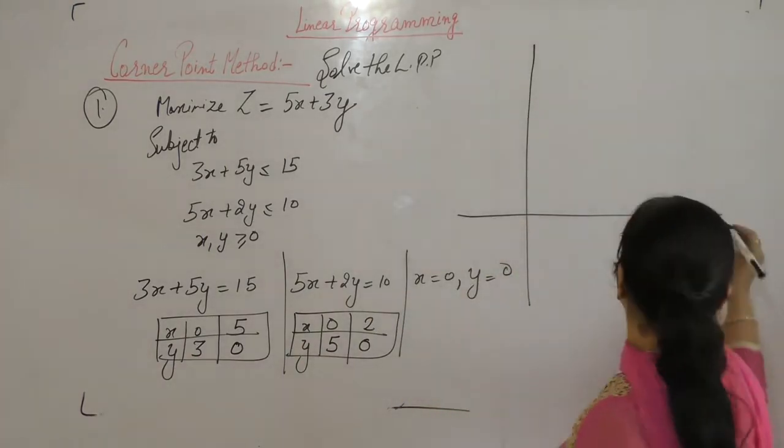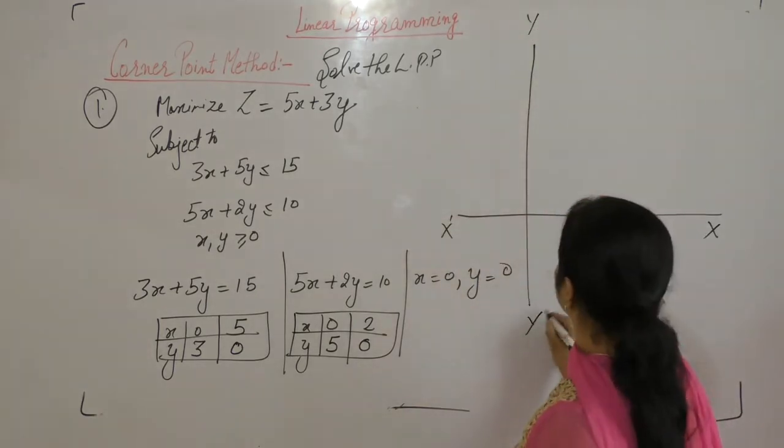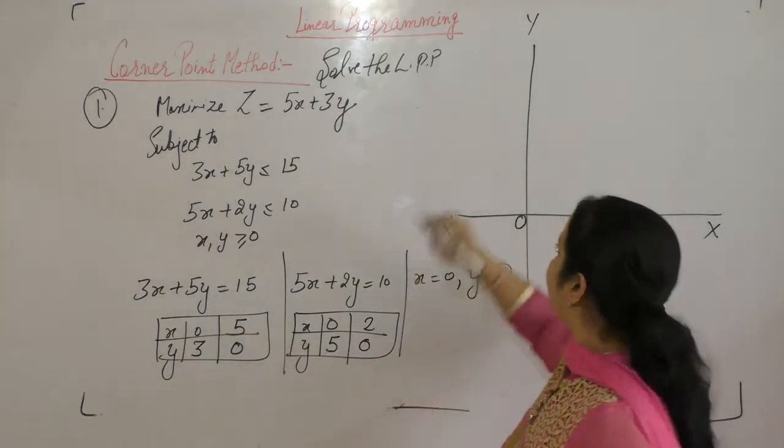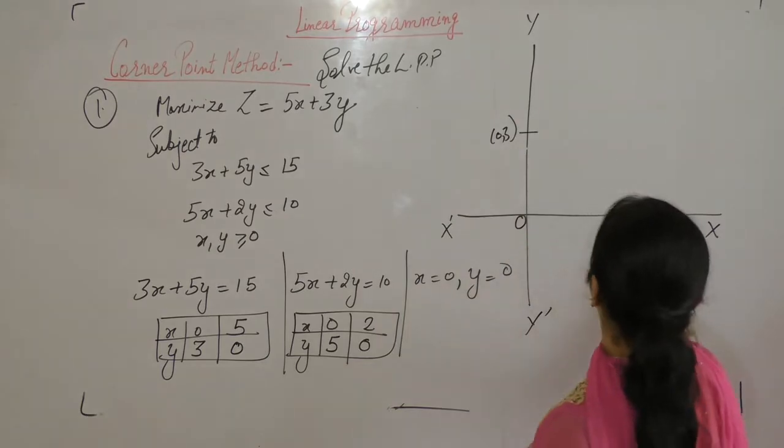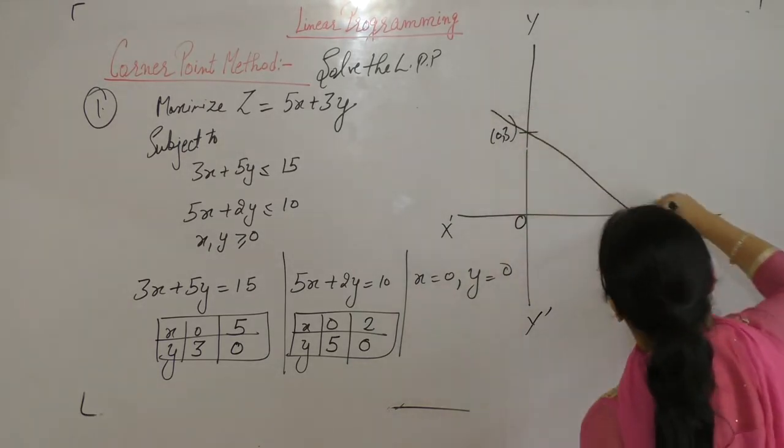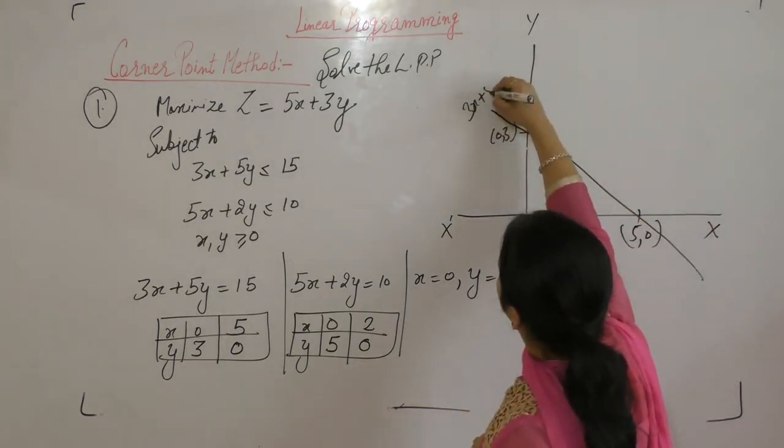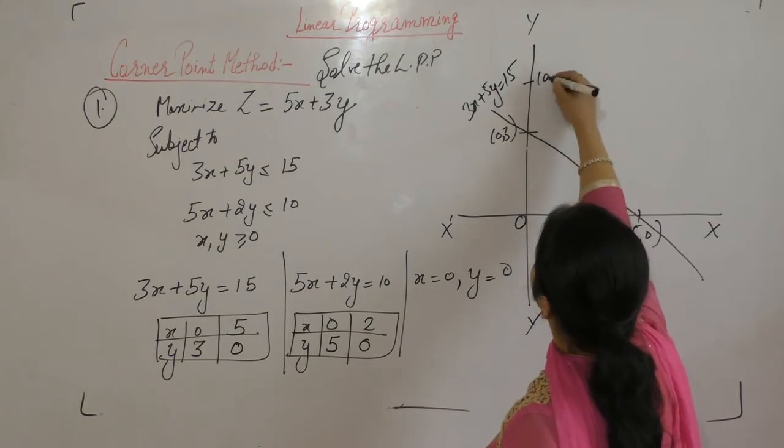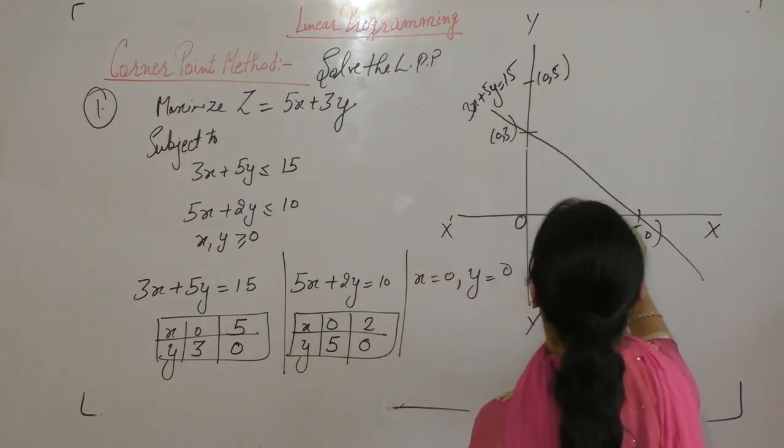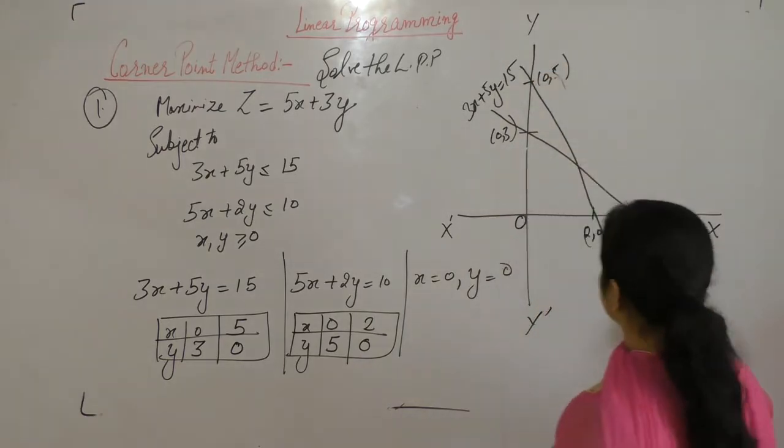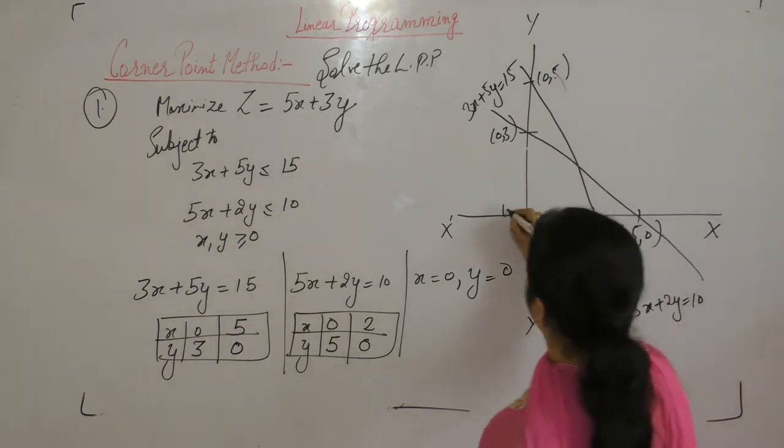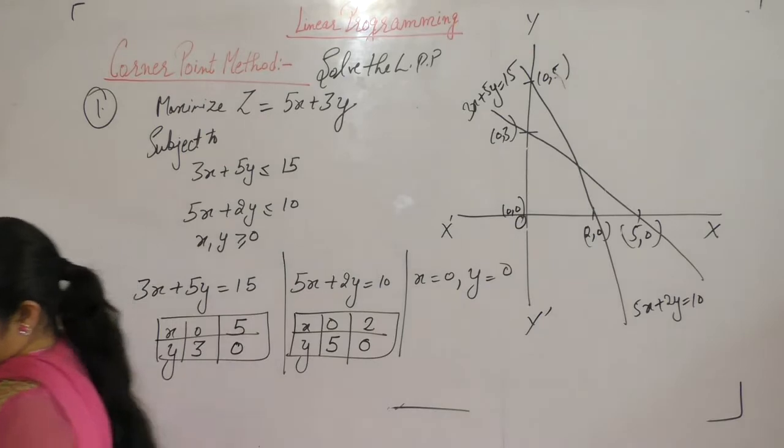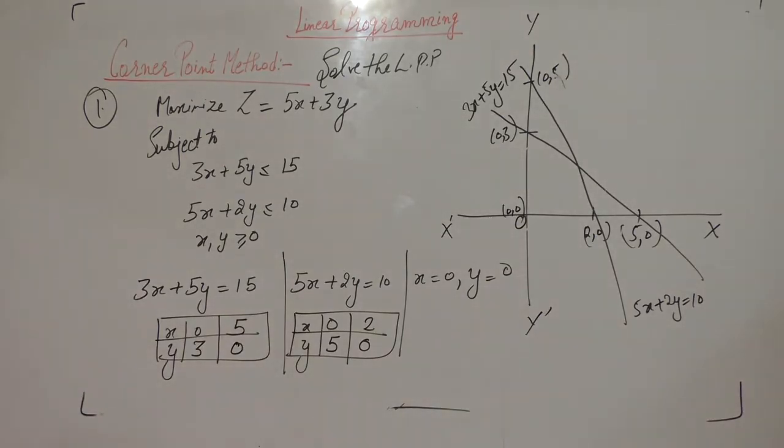This is our x, y plane. At origin, x is 0, y is 0. When x is 0, y is 3. When x is 5, y is 0. This is the first line, 3x plus 5y equals 15. For 5x plus 2y equals 10, when x is 0, y is 5. When x is 2, y is 0. One point is where x is 0 and y is 0.